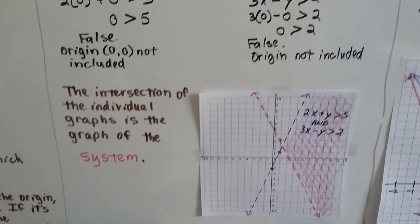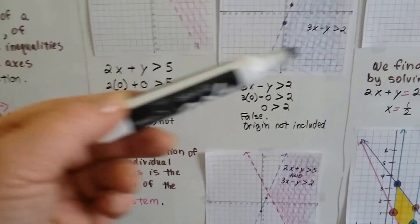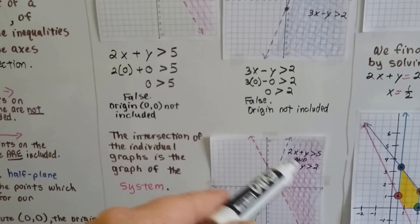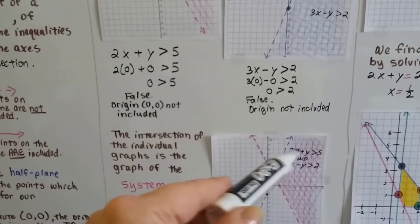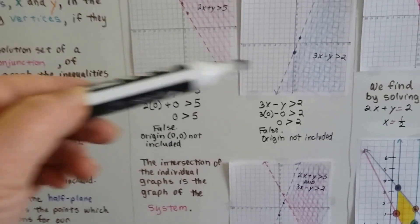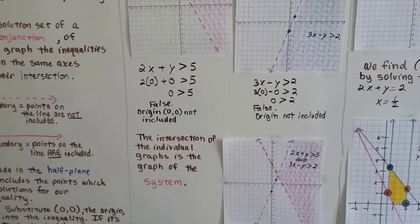And the intersection of the individual graphs is the graph of the system. If we laid the pink one on top of the blue one, we would get this. This shaded area is the solution for the system. It's this one laid on top of this one, and that's the combined area of the two graphs.